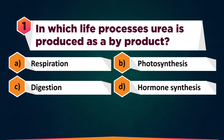In which life processes is urea produced as a by-product? A: Respiration, B: Photosynthesis, C: Dissection, D: Hormone synthesis.